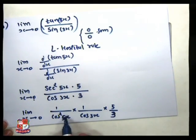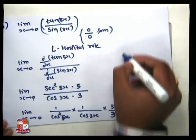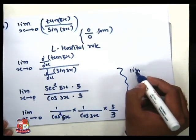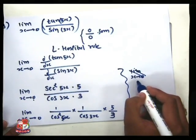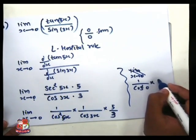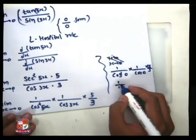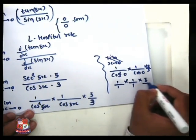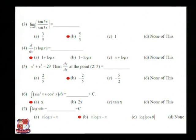Now our aim is to replace x equal to 0. cos²(0) is 1, and cos(3 times 0) is cos(0), again 1. So directly putting in: 1 upon 1 times 1 upon 1 times 5 by 3 equals 5 by 3. So your final answer is equal to 5 by 3.